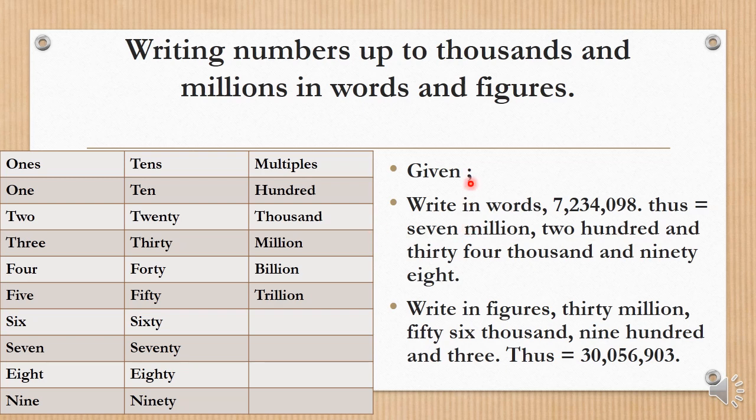They said, 'Given, write in words these numbers: 7,234,098.' Forget that I've put the commas because previously we learned about separating numbers by periods using commas so that we'll be able to read them. Once you can read a number, you can spell it. A period is made up of three digits.